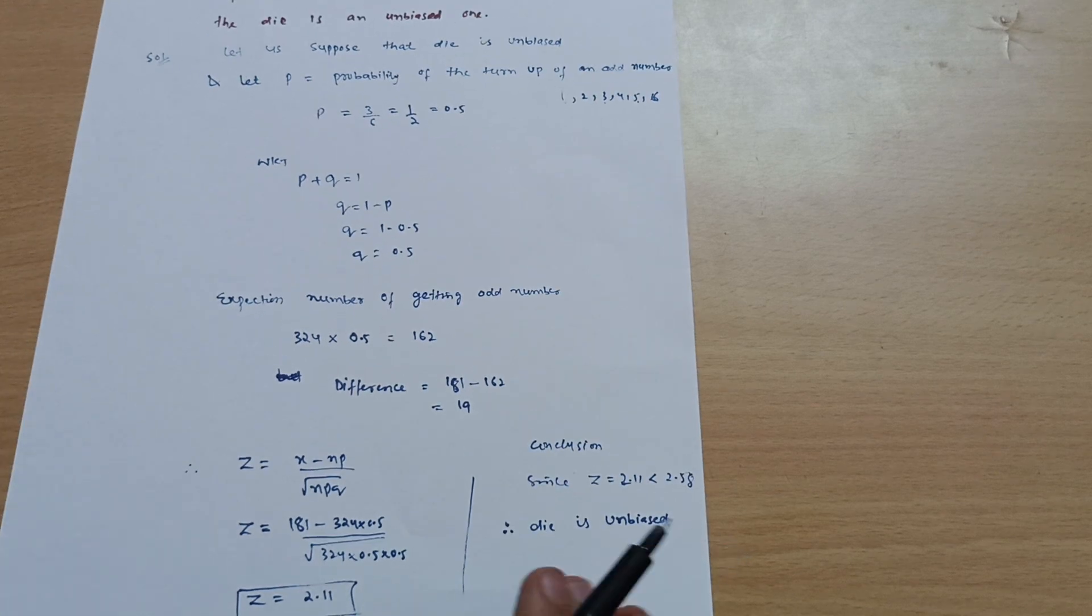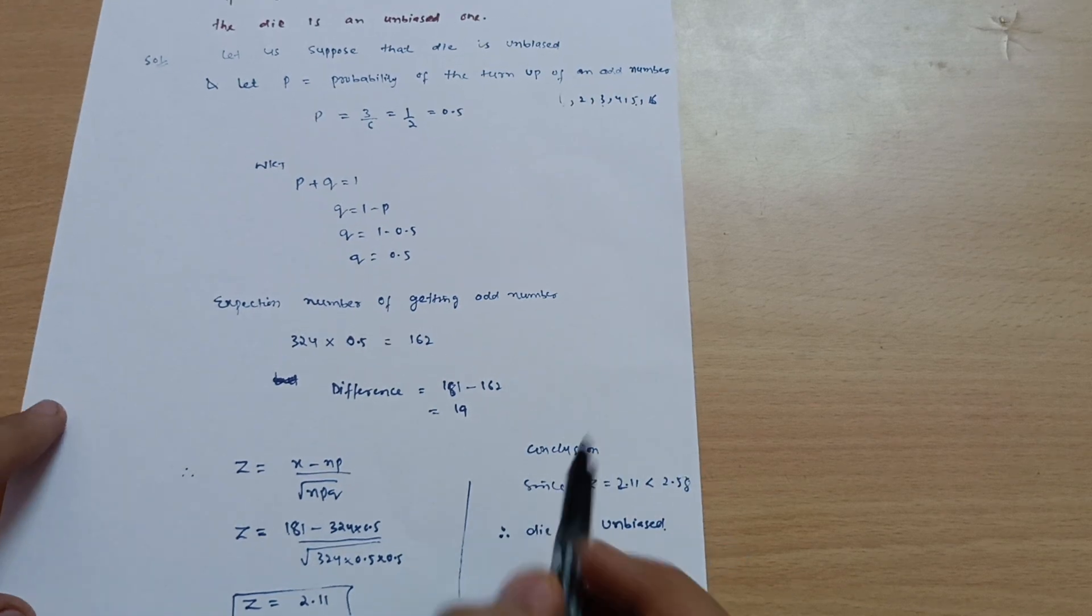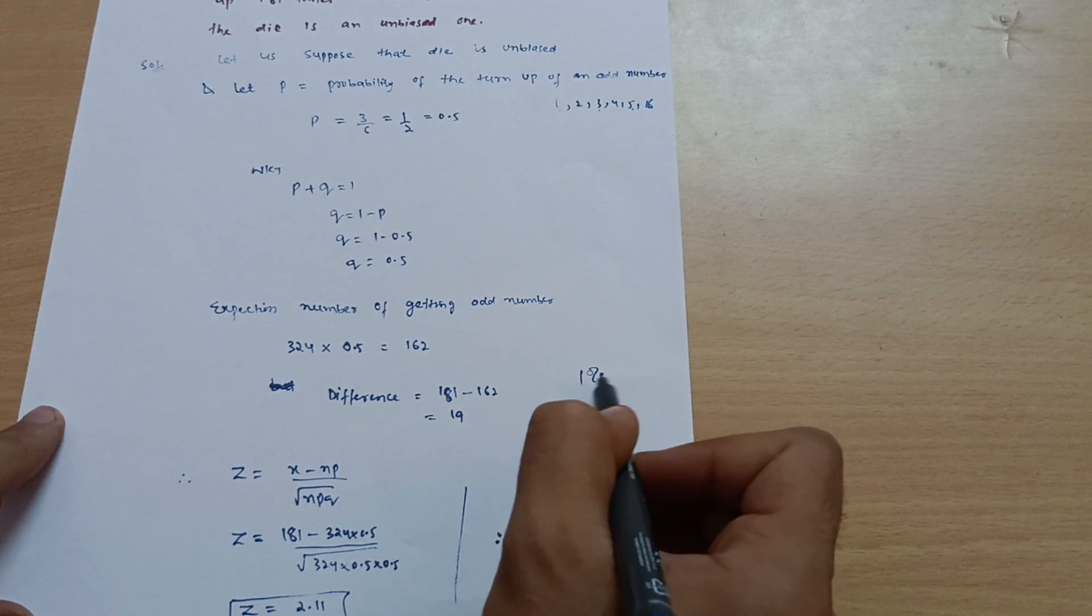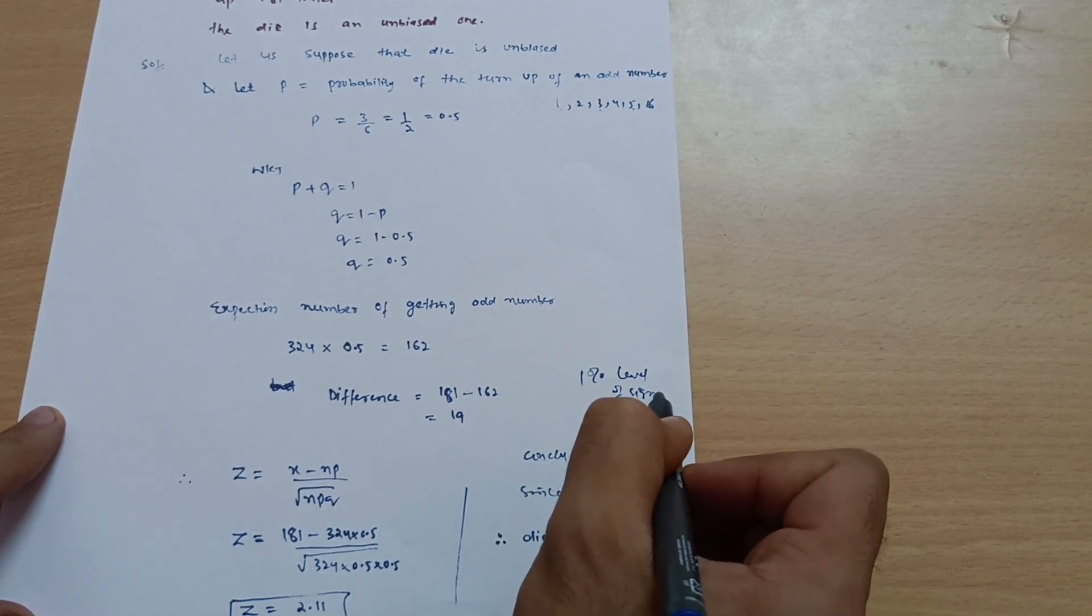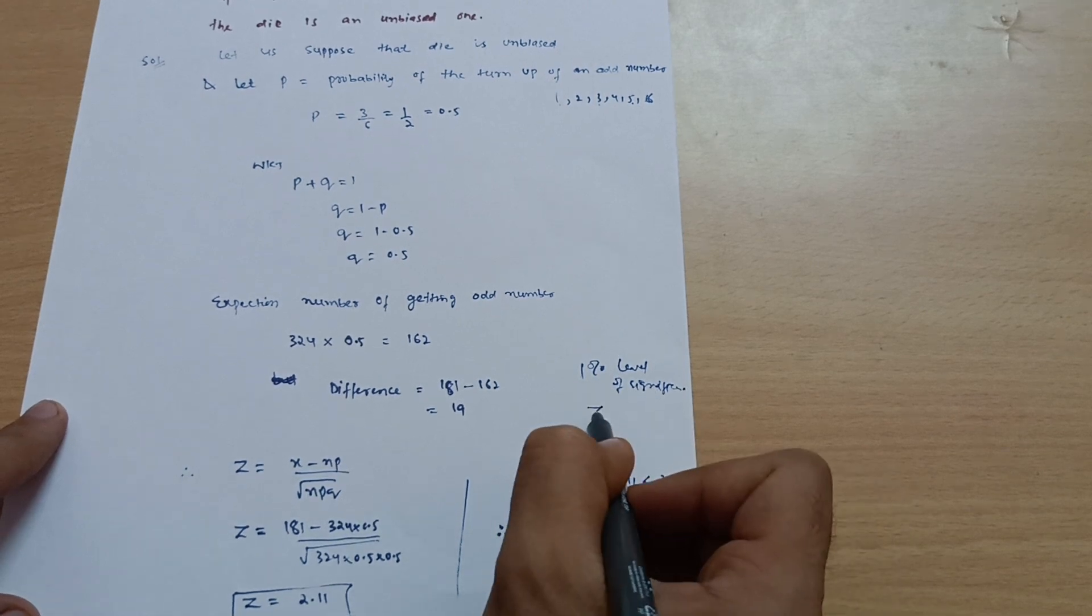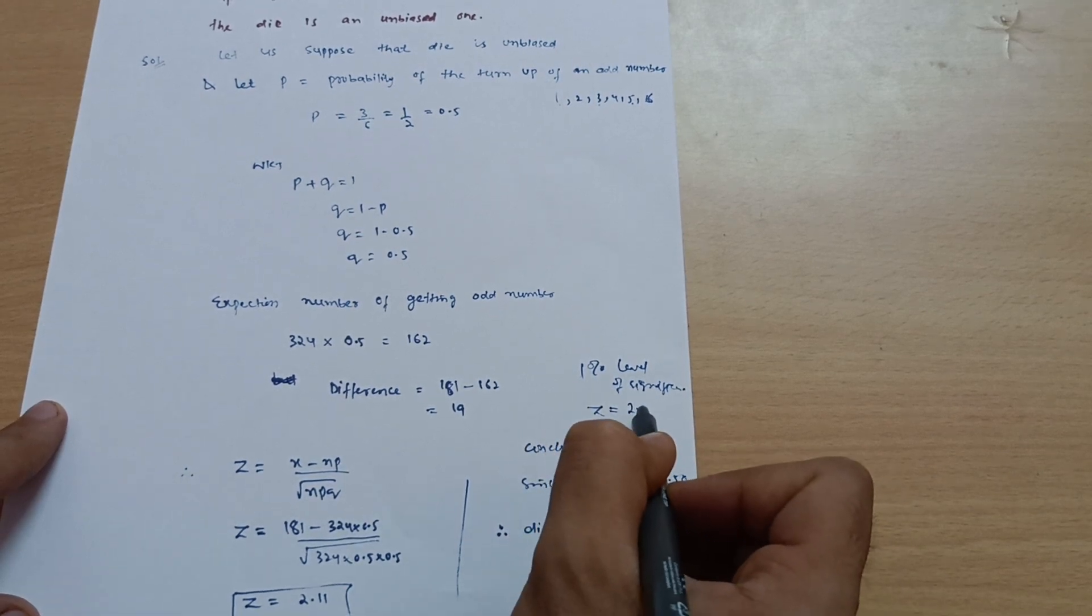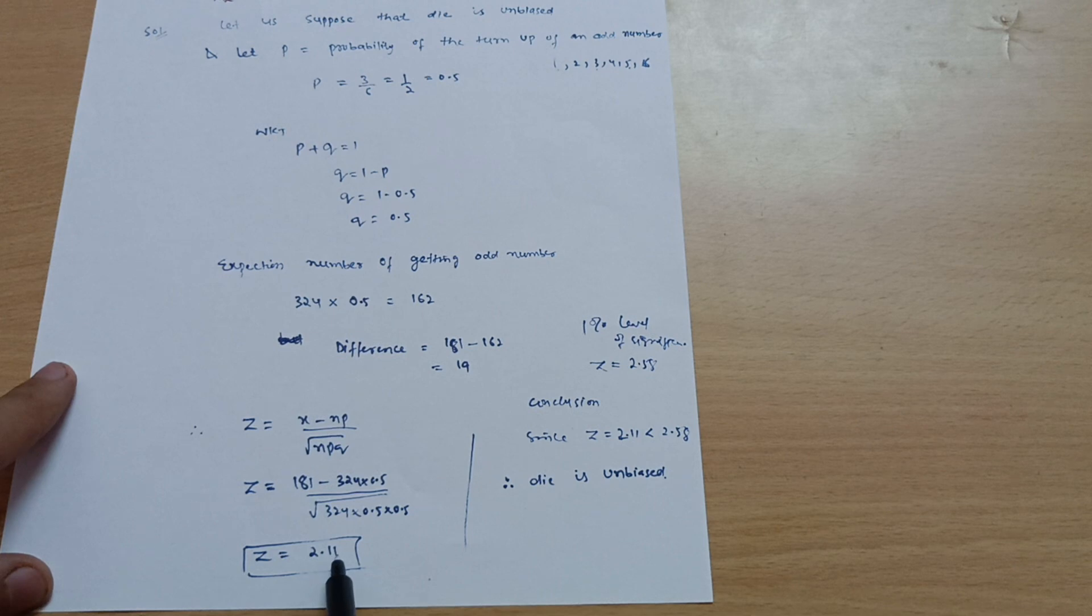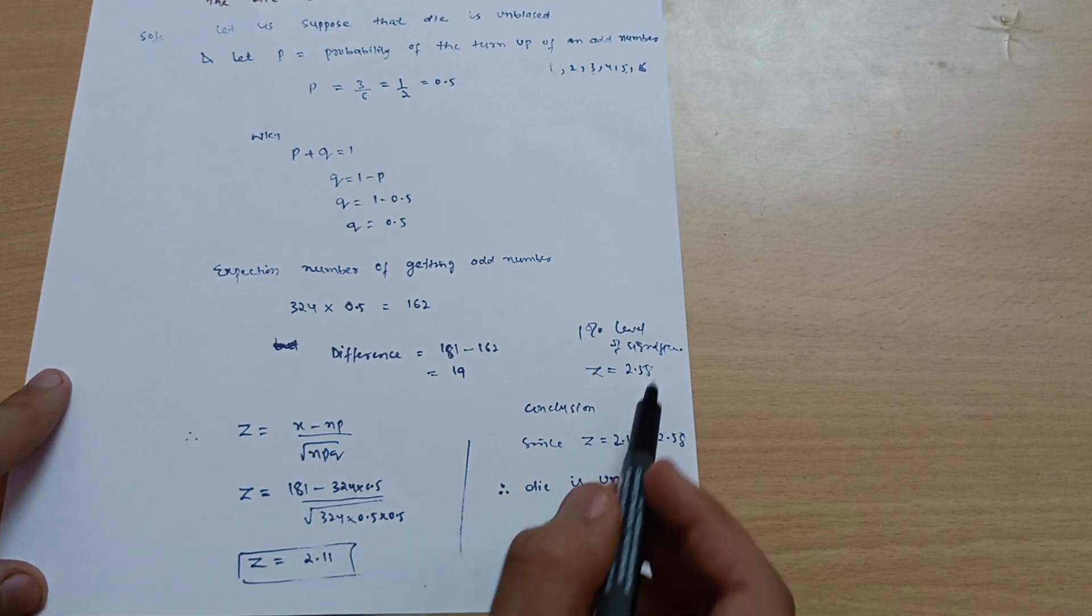As in the previous video also I have told you that at one percent level of significance, the value of the standard value of z is 2.58. So you are getting 2.11, so it is less than 2.58.